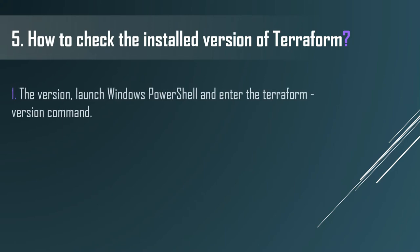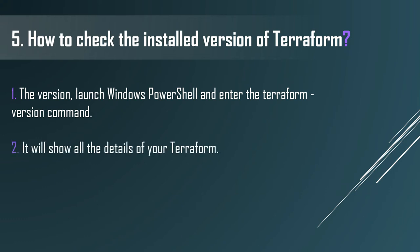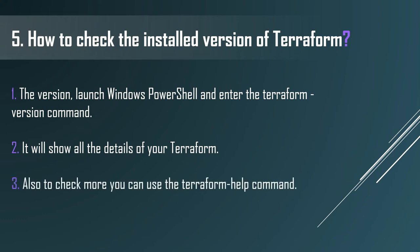For example, if you want to check the version in Windows, you just launch PowerShell and enter the 'terraform -version' command, and this will show all the details of your Terraform. Also, to check more, you can use the 'terraform -help' command. You can basically use the 'terraform -version' command to identify the version which you're running on.